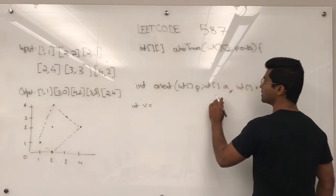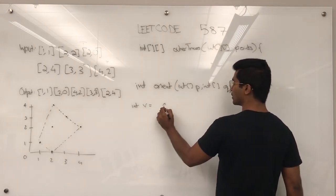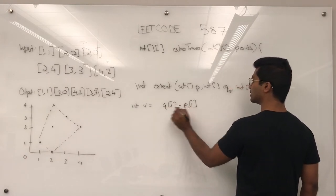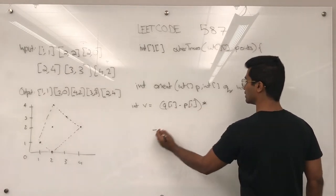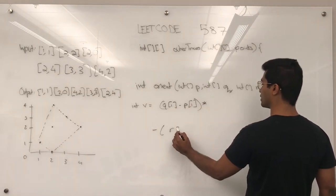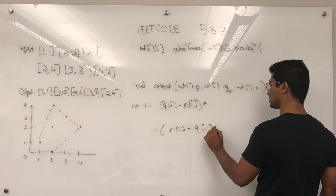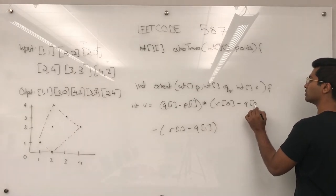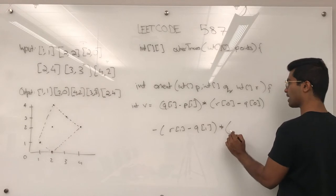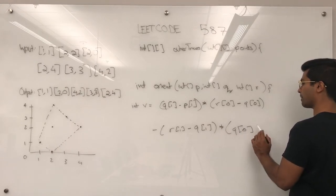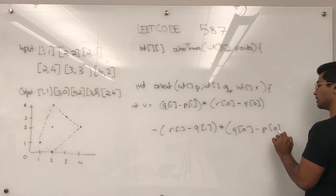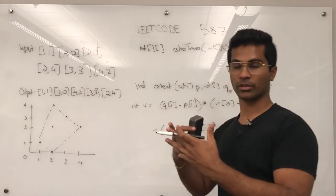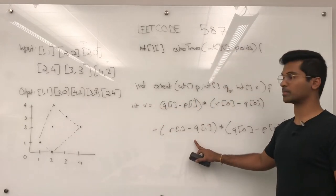int v is going to be q1 minus p1 times r0 minus q0, and this is going to be q0 minus p0 times r1 minus q1. The reason I did this is because when we combine the fractions from earlier for the slopes, this is all we need to determine if something is positive or negative.